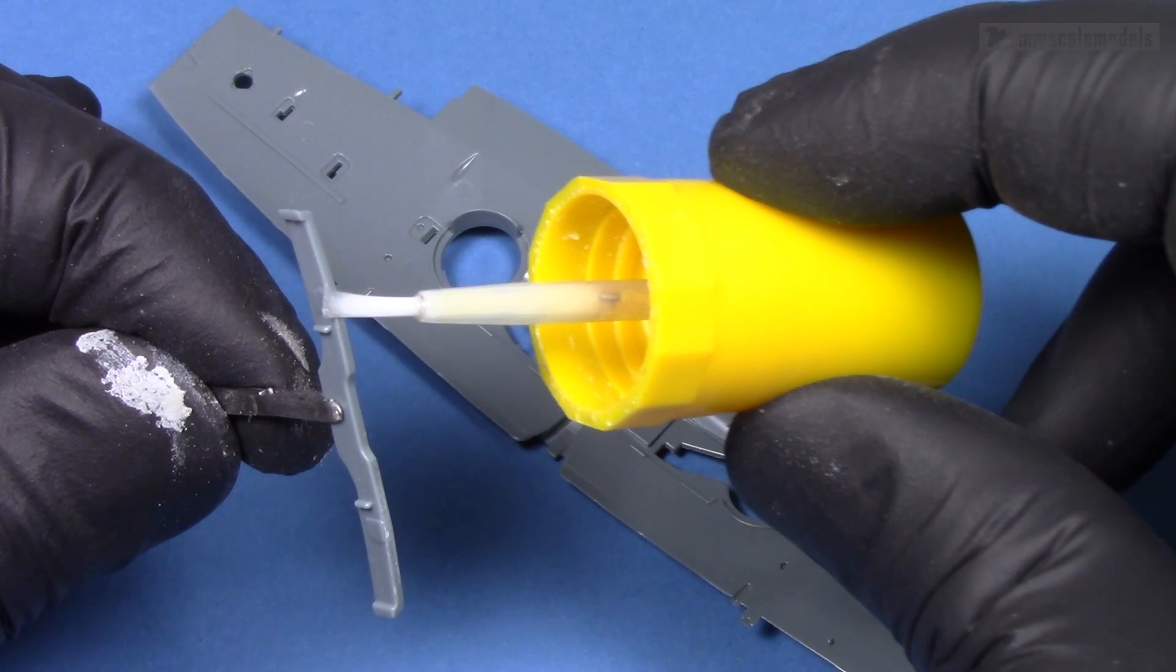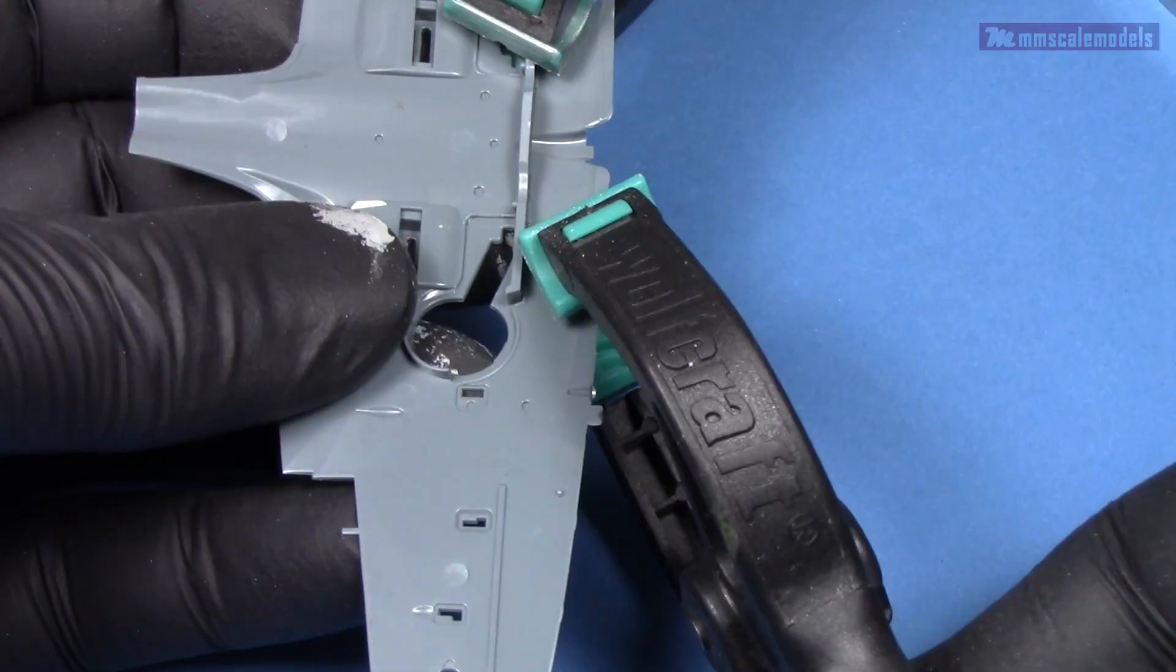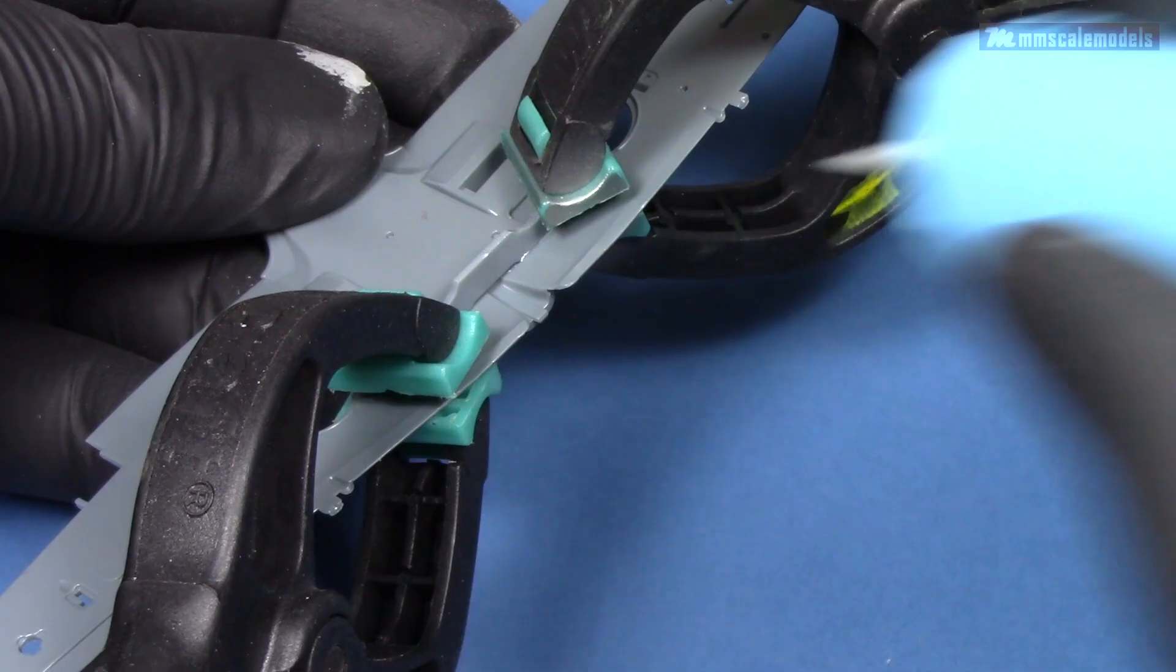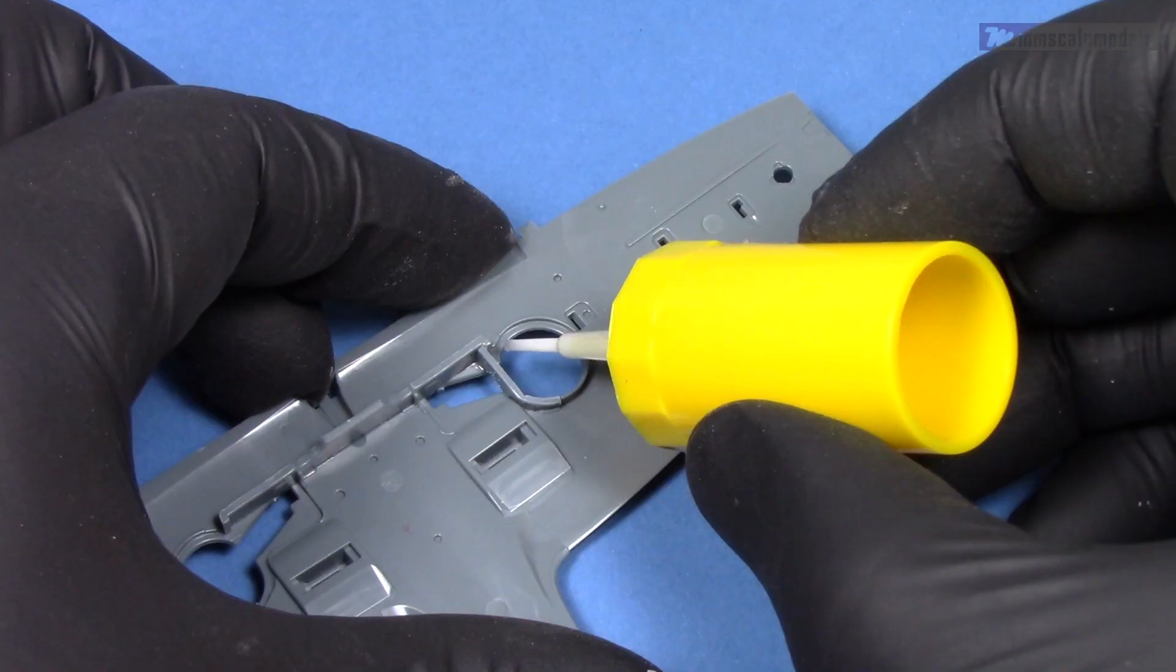The overall great impression from the kit continues to the wing area. The central spar gives the lower wing great rigidity and also is a part of both wheel wells.